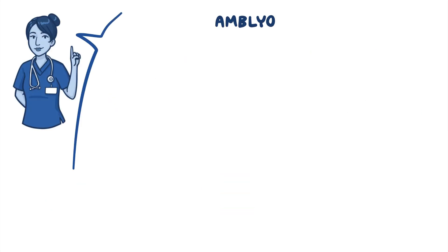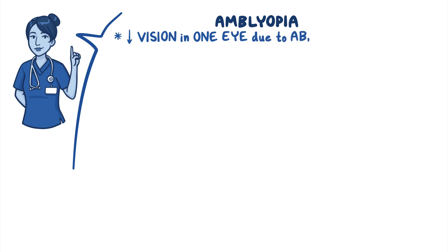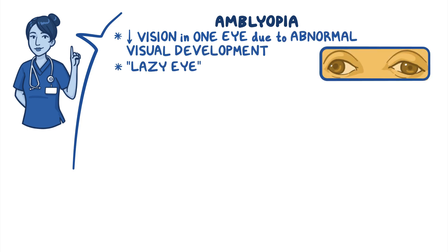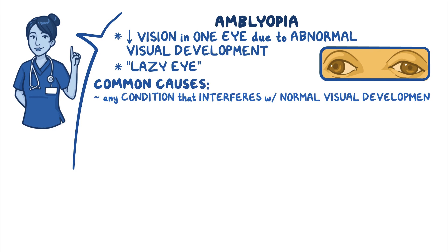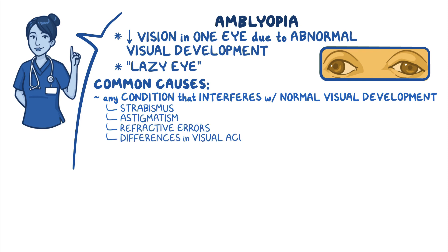As a quick recap, with amblyopia there's reduced vision in one eye due to abnormal visual development, commonly referred to as lazy eye. Common causes include any condition that interferes with normal visual development, such as strabismus, astigmatism, refractive errors, and differences in visual acuity between the two eyes.